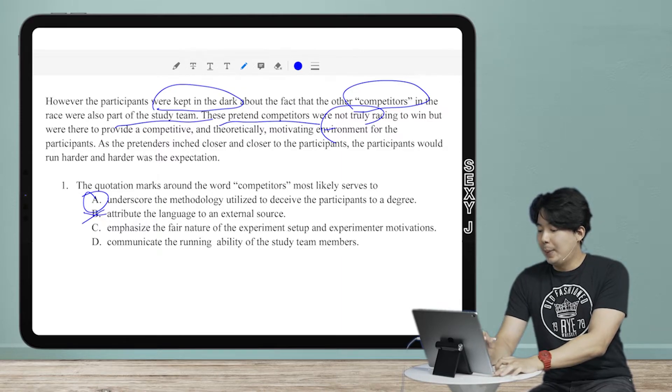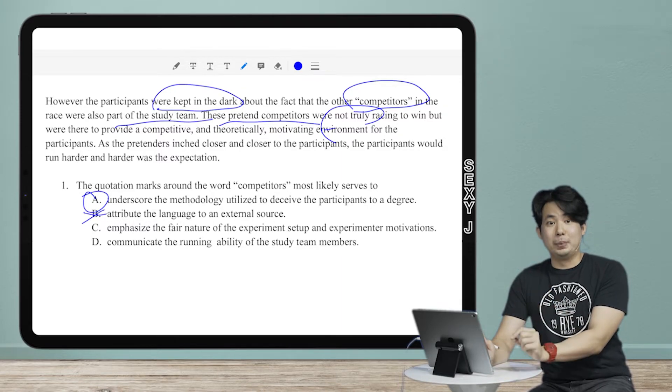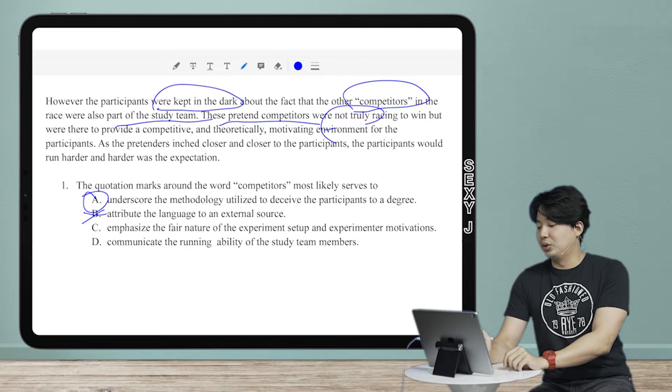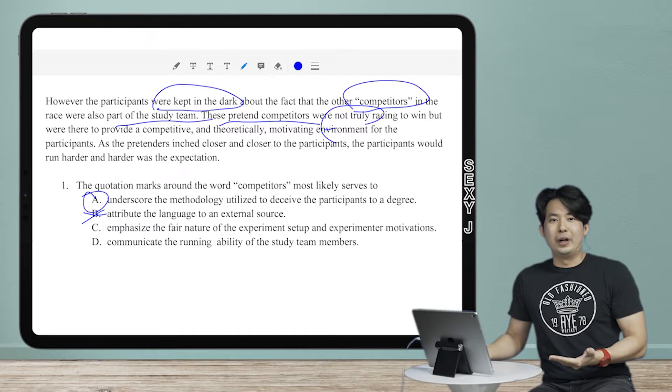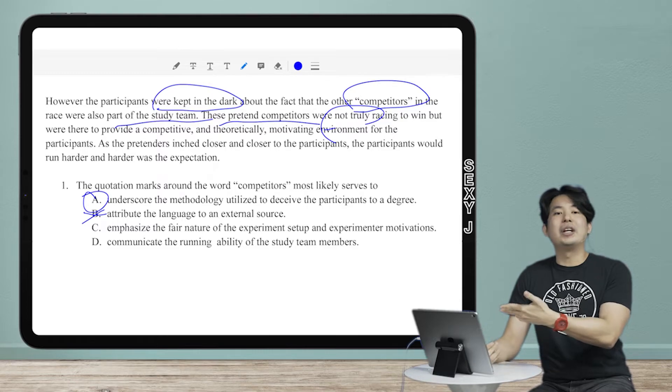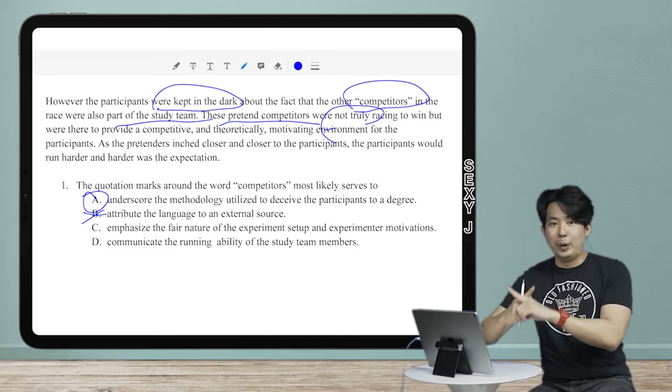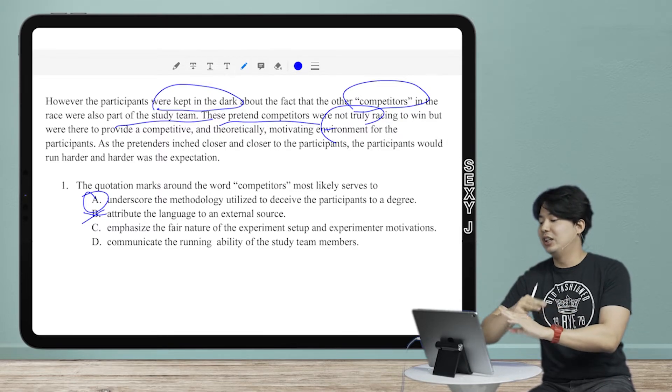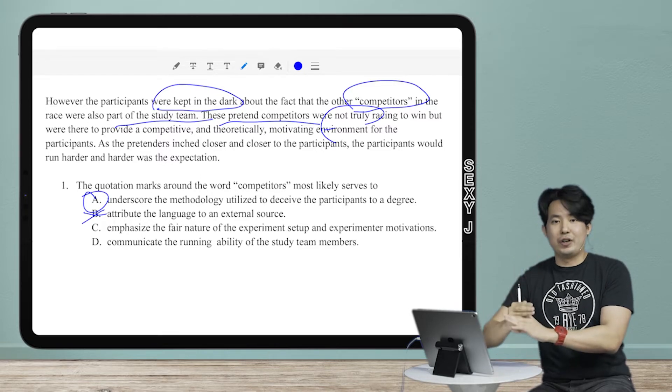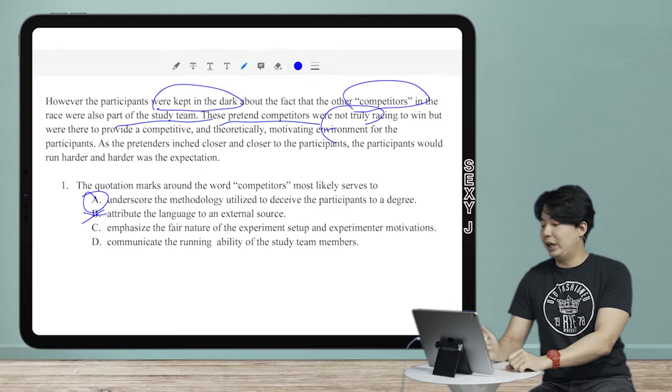Answer choice B is a terrible answer that everybody puts. Attribute the language to an external source. What does that mean? You're making a quote, right? So that's like somebody else said this. That is the most common trap answer. Never pick that guys. We are, I'm being very firm here. We're never going to have that as an answer for the quotation question.